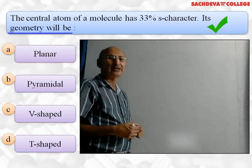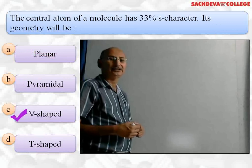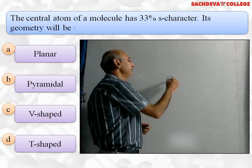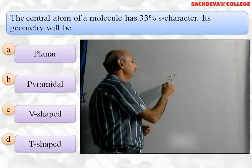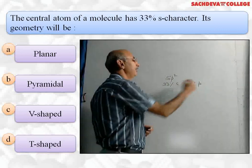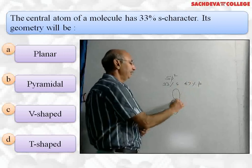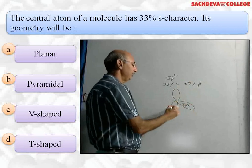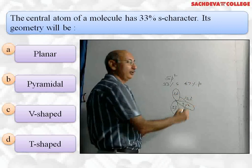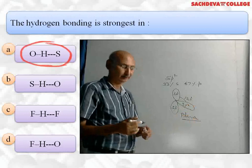Next question: the central atom of a molecule has 33% s-character. Its geometry will be (a) planar, (b) pyramidal, (c) V-shape, or (d) T-shape? 33% s-character means sp² hybridization, because in sp² hybridization there is 33% s-character and 67% p-character. The shape of sp²-hybridized orbitals is planar with a bond angle of 120°. So the correct answer is (a) planar.